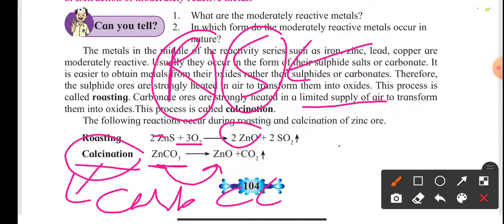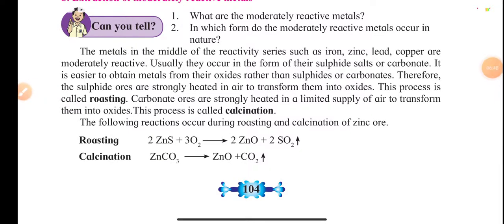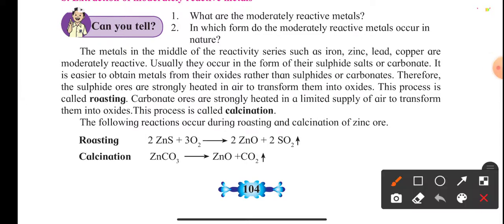This process of heating carbonate ore under limited air to transform it into oxide is called calcination. Zinc carbonate is transformed into zinc oxide through calcination. So calcination is when the carbonate ore is strongly heated under a limited supply of air to convert or transform it into oxide.